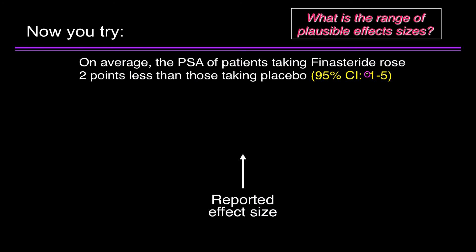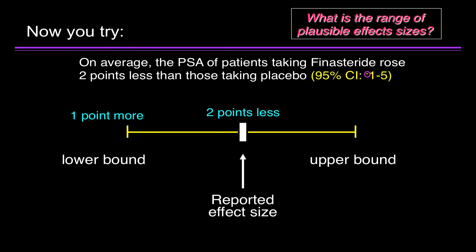Again, it helps to draw it. The reported effect size? It's 2 points less. But there's a margin of error. The lower bound? It's 1 point more. That's the negative. The upper bound is 5 points less.